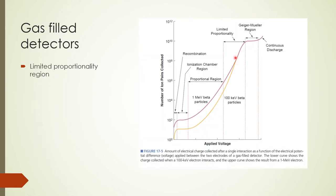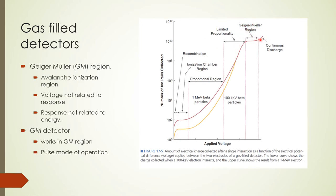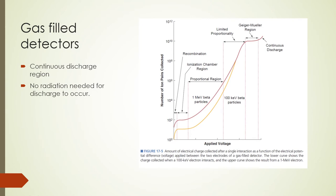Beyond the proportional region, we enter the region of limited proportionality as the voltage is increased further. The Geiger-Müller or GM region is beyond the region of limited proportionality. In this plateau region, there is an avalanche of ionization which represents almost complete ionization of the counting gas near the anode. Because of this effect, any increase in voltage does not increase the response, and the response is independent of the radiation producing it. GM counters are usually operated in pulse mode and are paralyzable unless measures are taken to avoid the effects. Beyond the GM plateau, atoms of counting gas near the anode may be ionized spontaneously, referred to as the region of spontaneous or continuous discharge, because the counting gas may be ionized even if there is no radiation entering the detector.